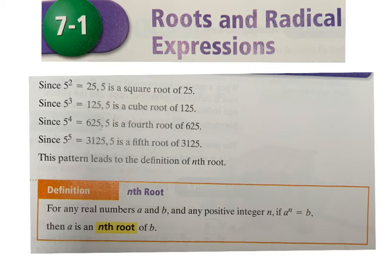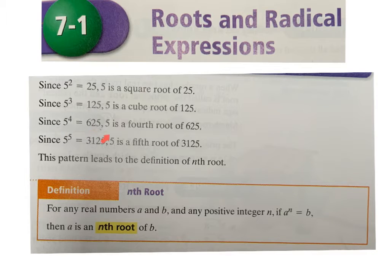The first thing this covers is getting used to the term 'roots.' We've dealt with square roots, and now we'll introduce higher roots. Since five squared equals 25, five is the square root of 25. Since five cubed equals 125, five is the cube root of 125. Since five to the fourth is 625, five is the fourth root of 625. This is the definition of the nth root: for any real numbers a and b and any positive integer n, if a to the n equals b, then a is the nth root of b.